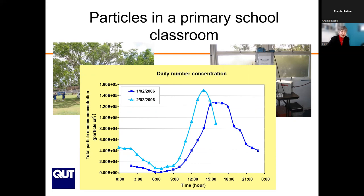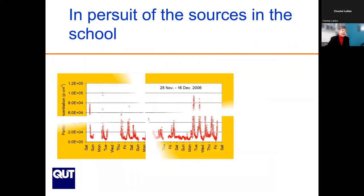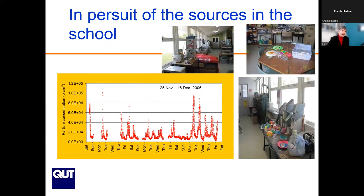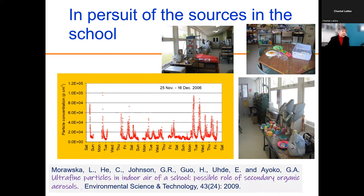We searched the entire school and didn't find any combustion sources we would expect. The government asked whether the school should be closed given this unidentified and very strong source. Several months later the study was repeated, and by that stage we had a hypothesis: the problem was formation of particles in the classrooms from products emitted by what the kids were using in art classes. Art classes in schools are now like chemistry labs with all kinds of potential emission sources, in particular volatile organic compounds.